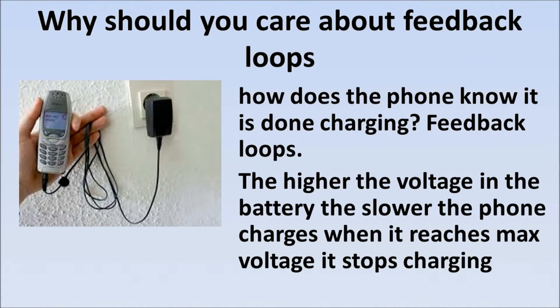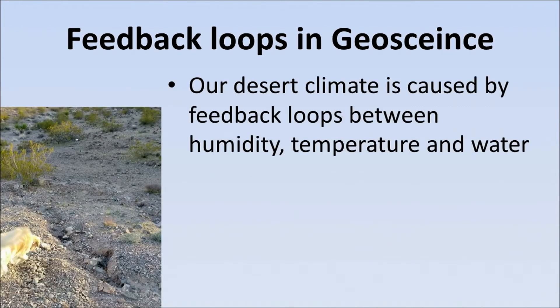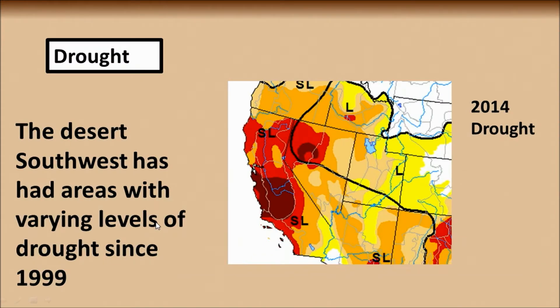But, what about earth science? Let's focus on the earth for a second. At least for my students, you live in a desert biome. Our desert biome, or climate, is actually caused by feedback loops. Feedback loops between humidity, temperature, and water. Let's get to our next example of a feedback loop in geoscience that you've probably experienced before, at least if you live in this region. And that would be drought.